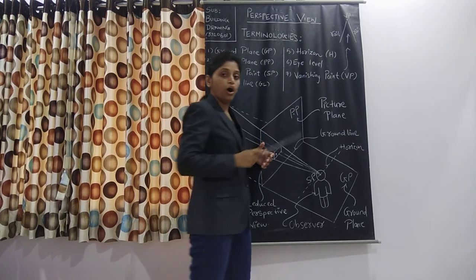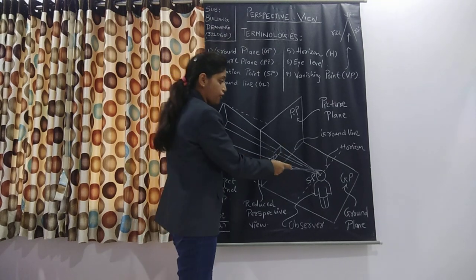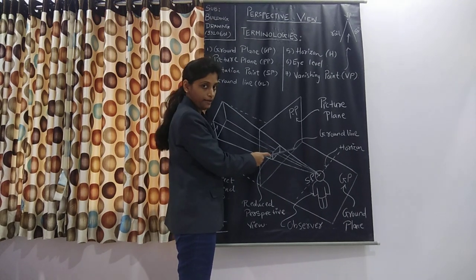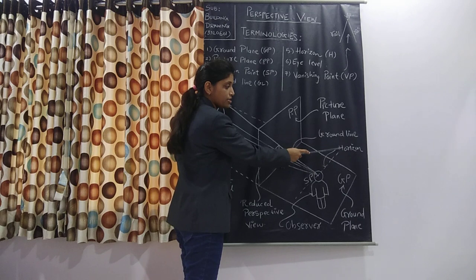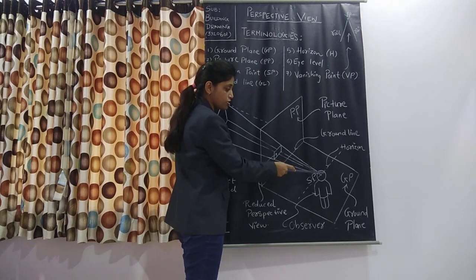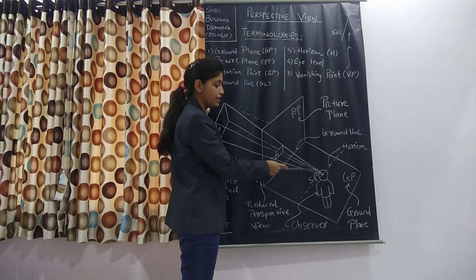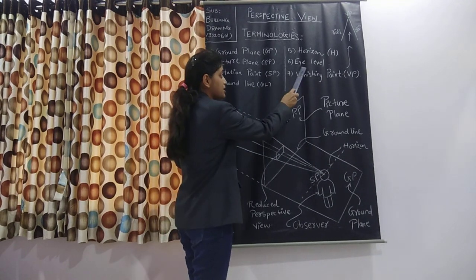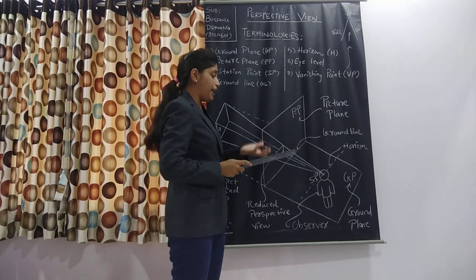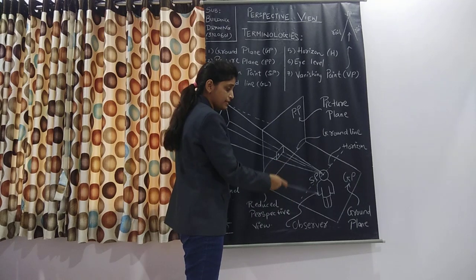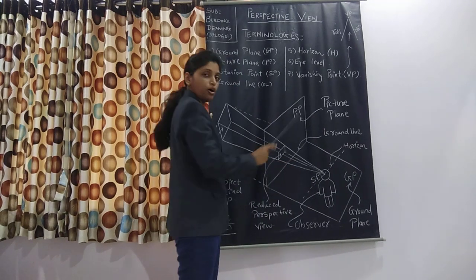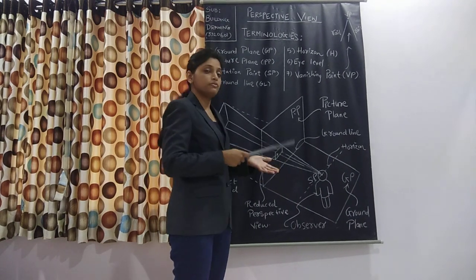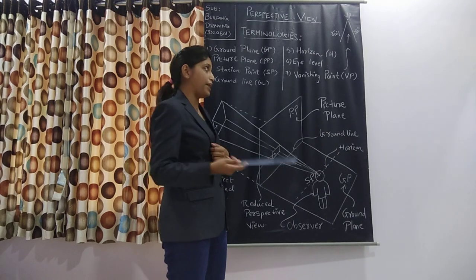The next definition is of horizon. From the eye of the observer, one line is drawn which is parallel to the ground line. That imaginary line is known as horizon. I have indicated it as a dotted line — that is horizon. Next is eye level. It is the level of the eye of the observer. The vertical distance between the ground plane and the eye of the observer is considered as eye level. On average, the observer's eye level is taken as 1.5 meters.